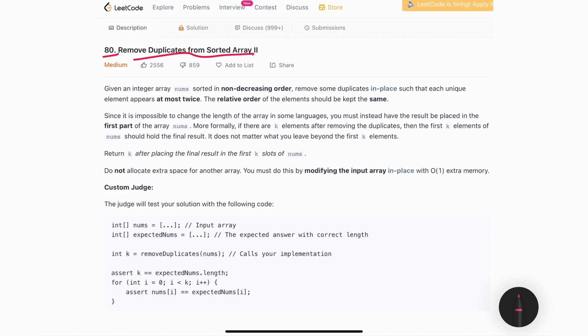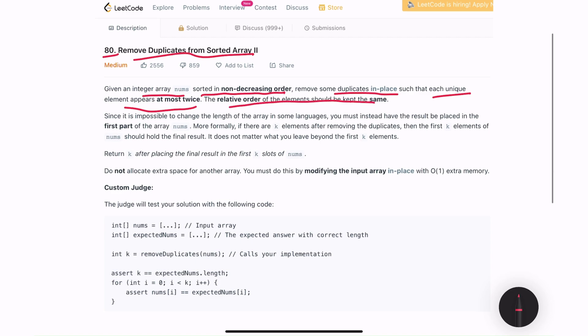The problem statement is: we are given an integer array nums which is sorted in a non-decreasing order, which means increasing or ascending. We need to remove the duplicates in place such that each unique element appears at most twice. The relative order of the elements should be kept the same. Another part to the challenge is we should not allocate extra space for any other array. We need to solve this by modifying the input array in place with O(1) extra memory.